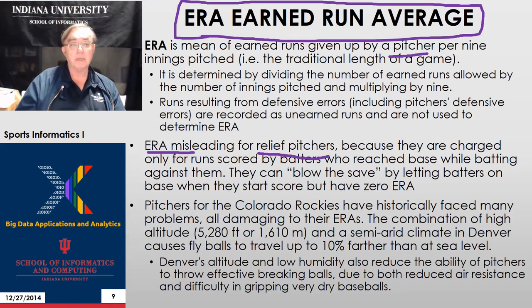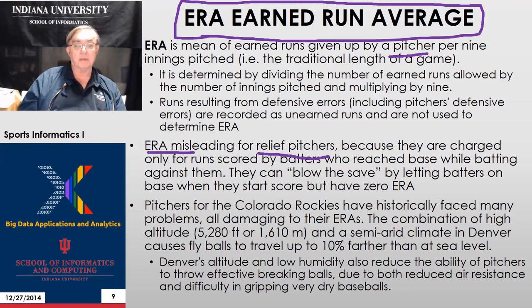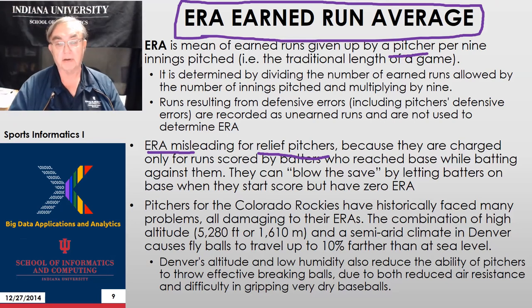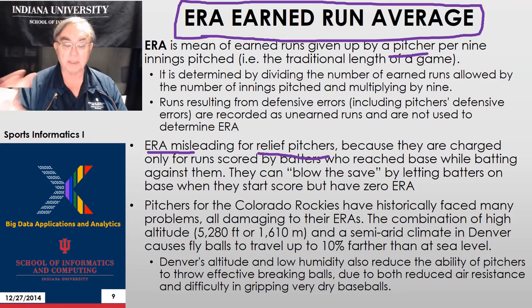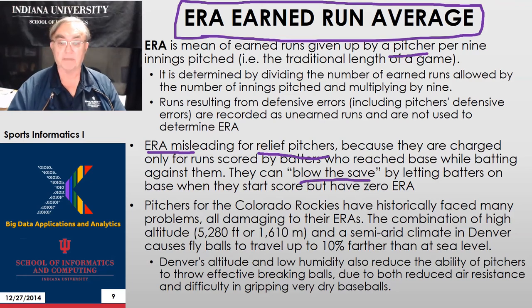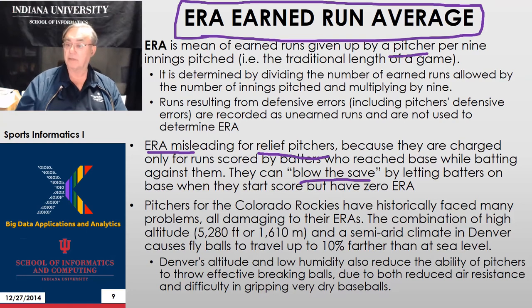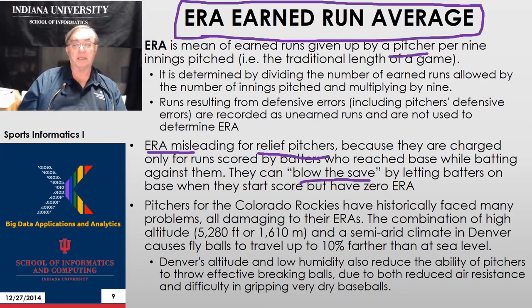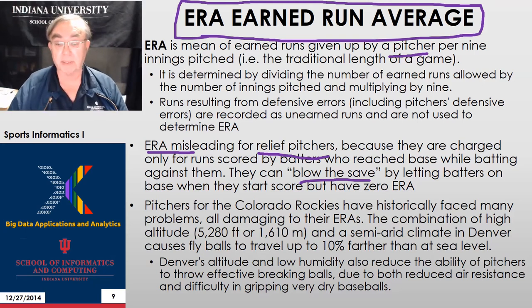ERA is also a little complicated and somewhat misleading for relief pitchers. When the relief pitcher comes on, there's typically a problem — the opening pitcher may have stranded a couple of people on base. You bring in your super relief pitcher who's good at throwing half a dozen pitches to destroy the opponents. But if that pitcher makes a mistake and lets in a hit, and those two people on base score, that's actually charged to the opener, not to the relief pitcher. So there's a measure called blowing the save, which is relevant here — the save is when the relief pitcher comes on while their team is in the lead, and that team wins the game. Blowing the save is when they let people score so the opponents win.